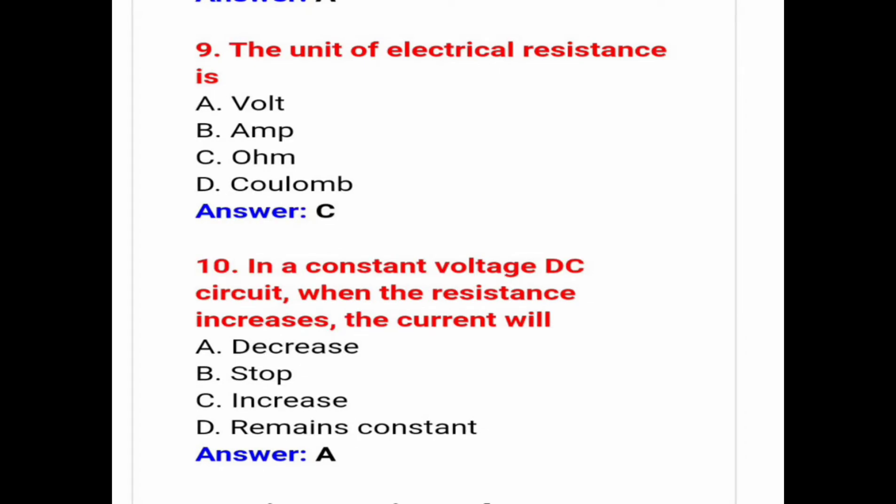The unit of electrical resistance is ohm. Next, in a constant voltage DC circuit, when the resistance increases, the current will — answer is A — decreases.